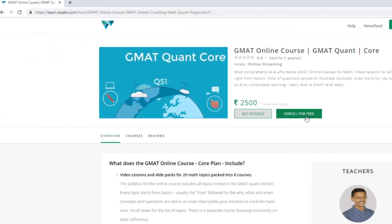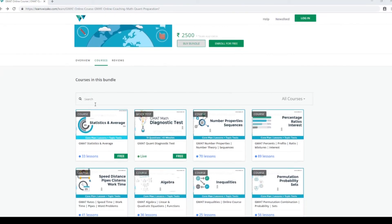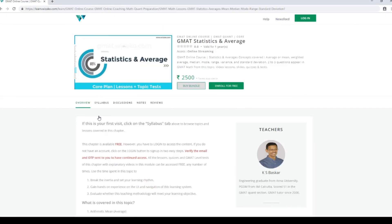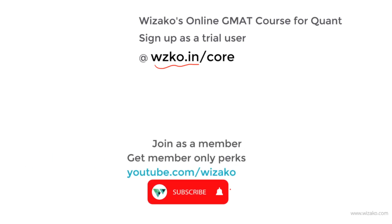Sign up as a trial user at wzko.in/core, one of the most comprehensive online GMAT courses. Get started with a free topic on statistics and averages, then pay to unlock the remaining topics. Subscribe to the channel at youtube.com/wizako and spread the word among your friends preparing for GMAT. You may also join as a member for a small monthly fee and enjoy member-only perks.